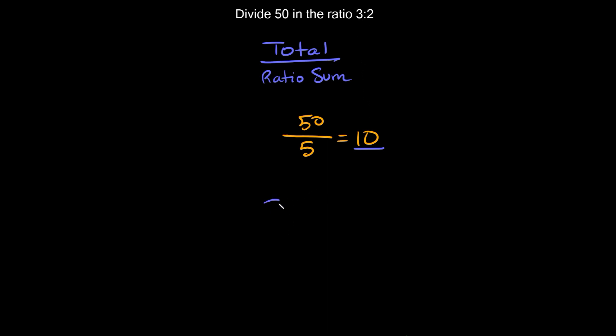So again the original ratio was 3 to 2. We're going to multiply each of these numbers by this number that we came up with. So we're going to say 10 times 3, and we're going to say 10 times 2.